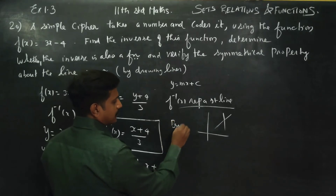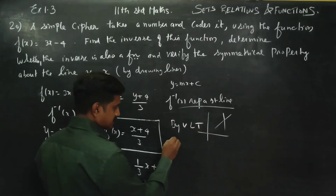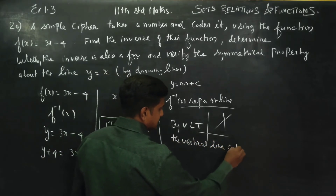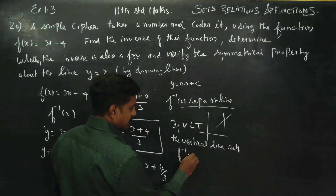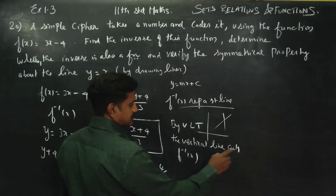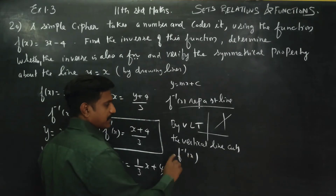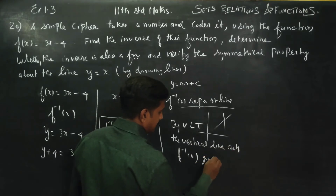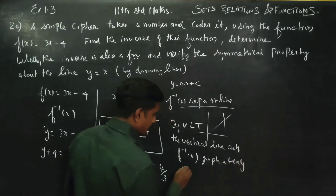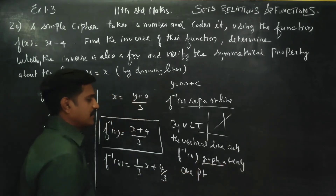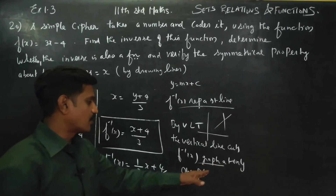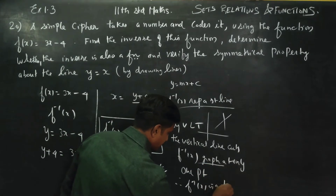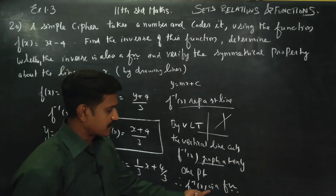Therefore, by the vertical line test, the vertical line cuts f inverse of x. The vertical line cuts the f inverse graph at only one point. F inverse of x would intersect the straight line graph at only one point. Therefore, f inverse of x is a function.